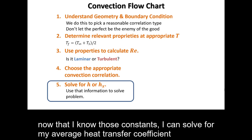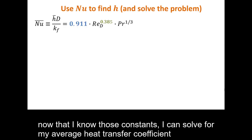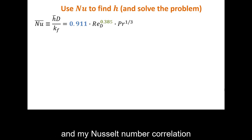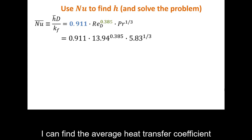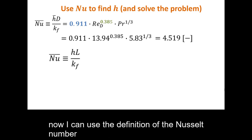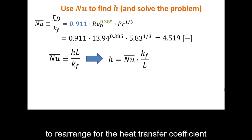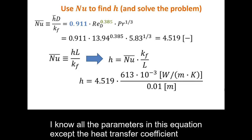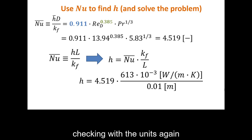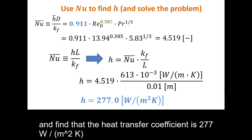Now that I know those constants, I can solve for my average heat transfer coefficient. Using the definition of the Nusselt number and my Nusselt number correlation, I can find the average heat transfer coefficient. First, I'll find the Nusselt number, which in this case is just over 4.5. Now I can use the definition of the Nusselt number to rearrange for the heat transfer coefficient. Checking units, I find that the heat transfer coefficient is 277 watts per meter squared Kelvin.